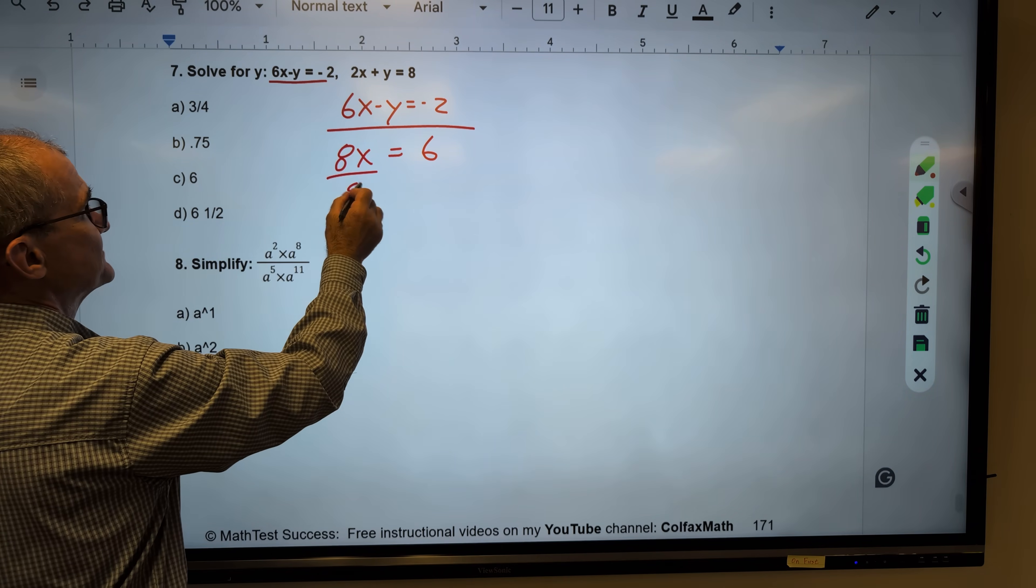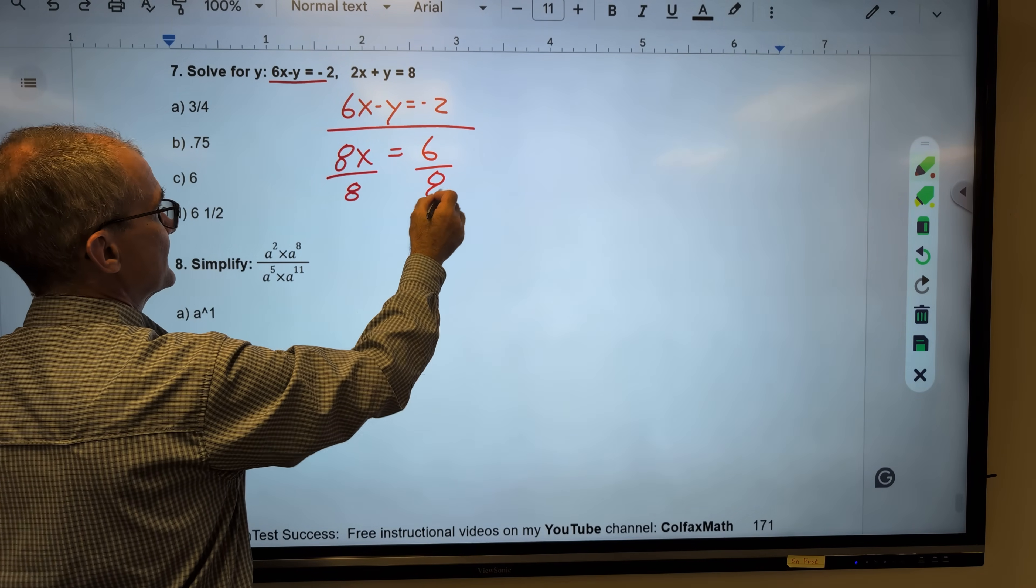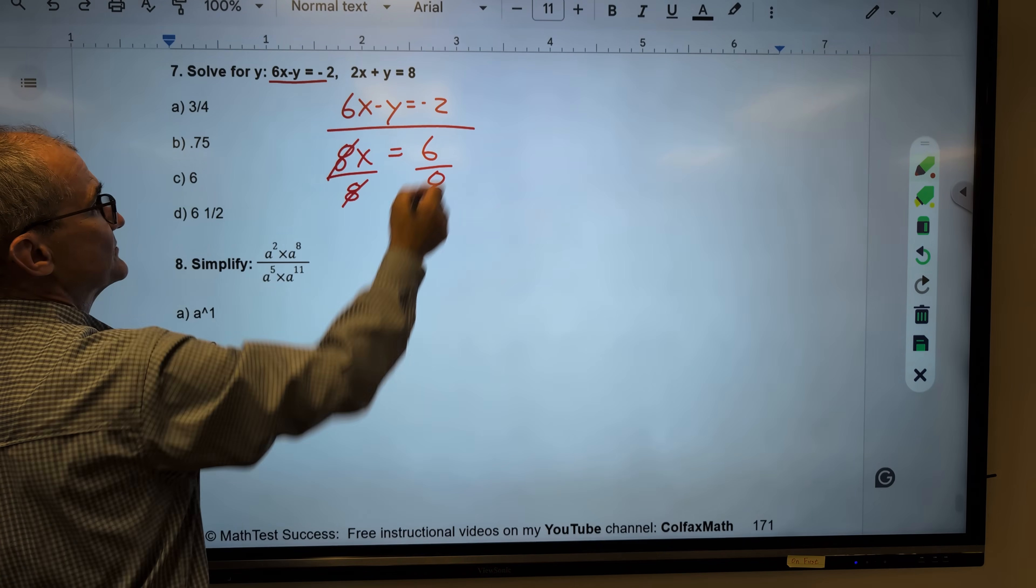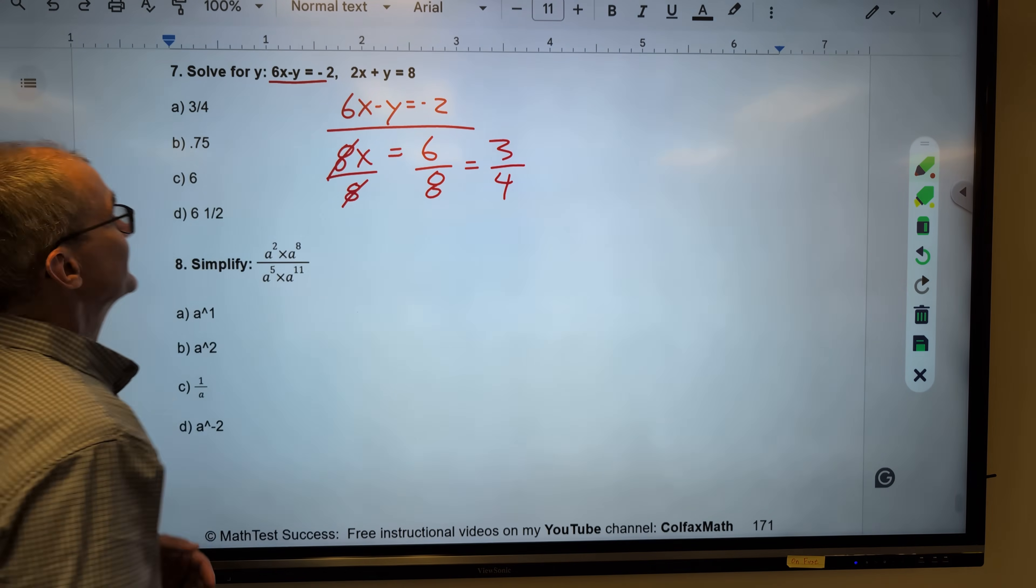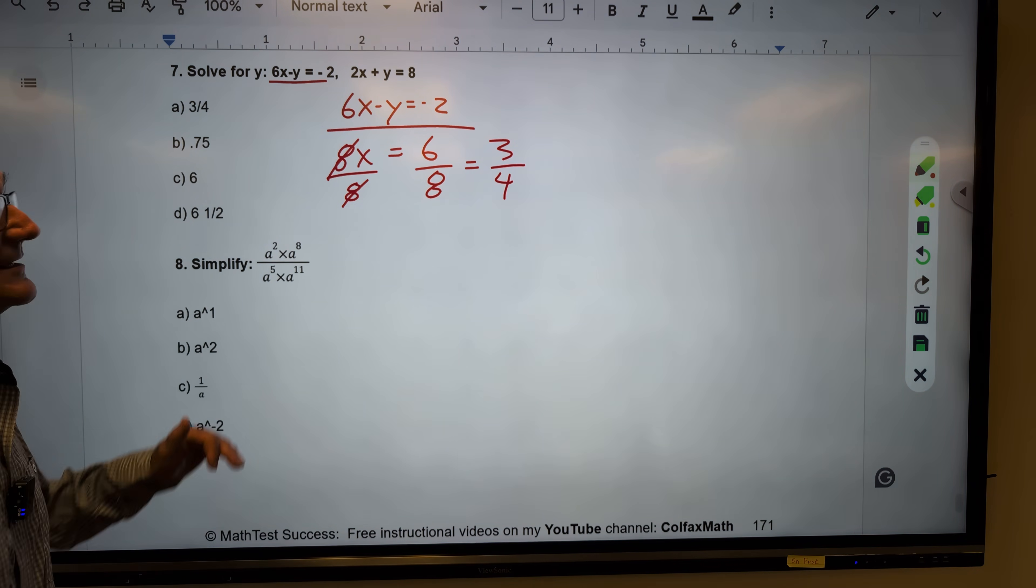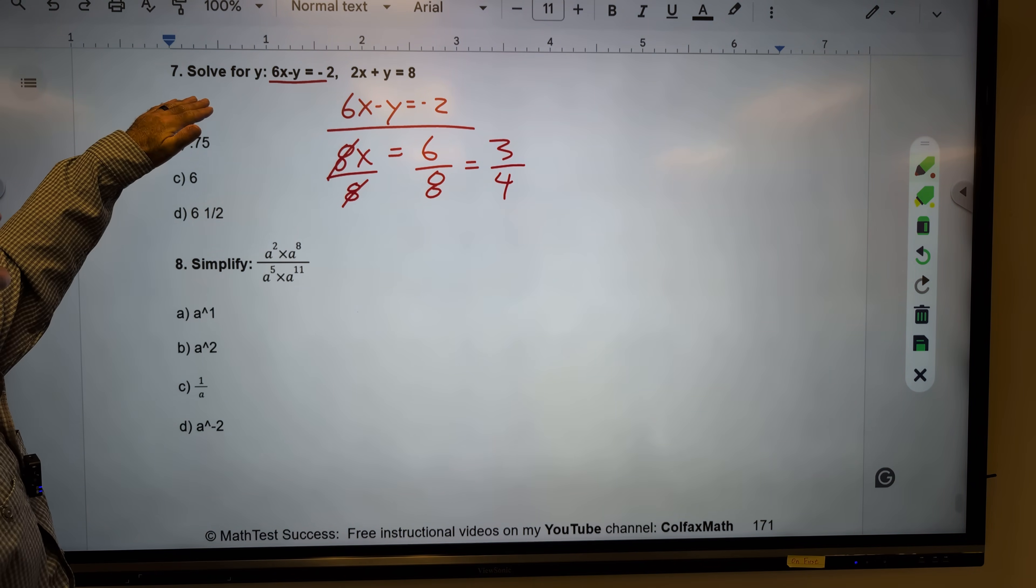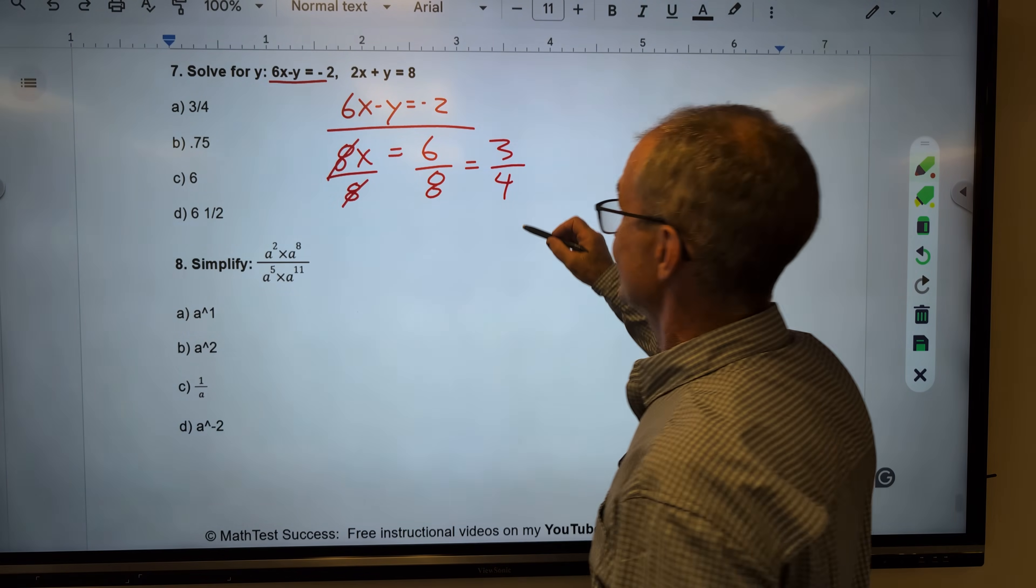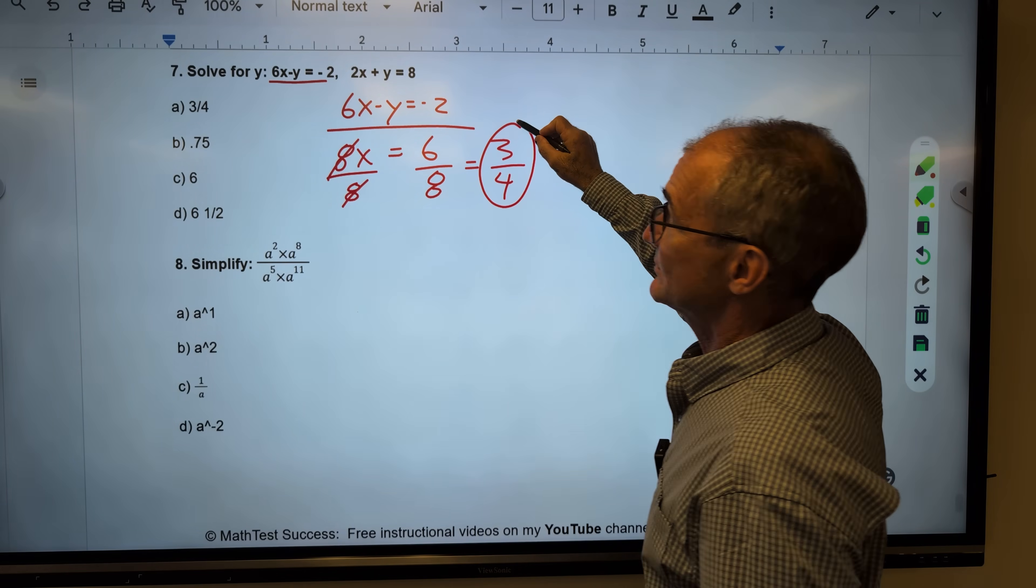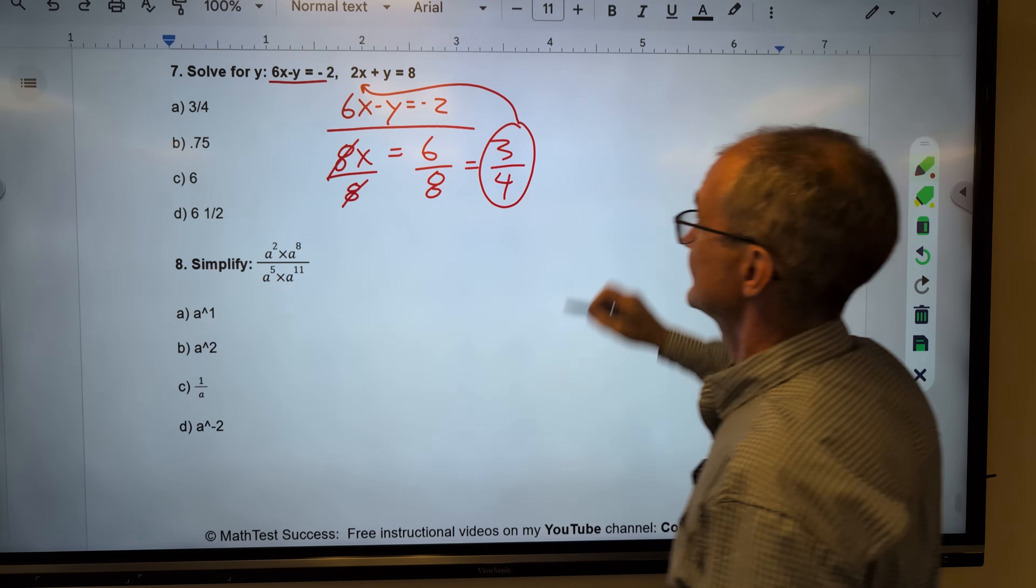2x plus 6x is 8x. y plus negative y is 0. They cancel out. 8 and negative 2 is 6. I divide both sides by 8. These cancel. x is equal to 6 over 8. I reduce that fraction to 3 over 4. And I feel like, oh, it's answer A. It is not. The problem says solve for y. So now I have to take this value of x, plug it into either equation. I think I'm going to plug it in right there.